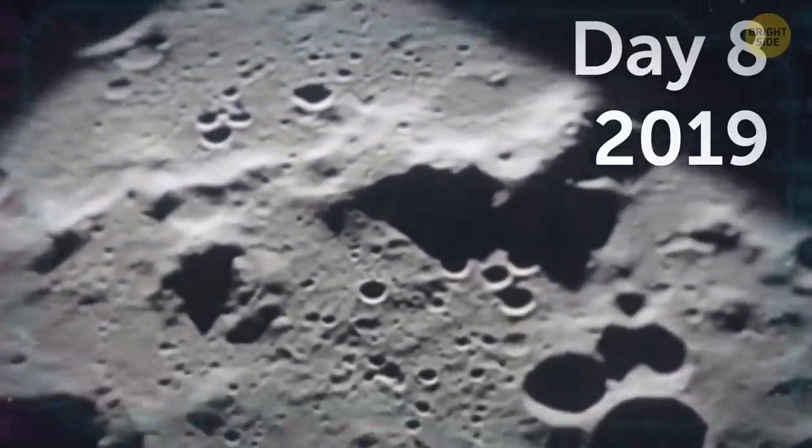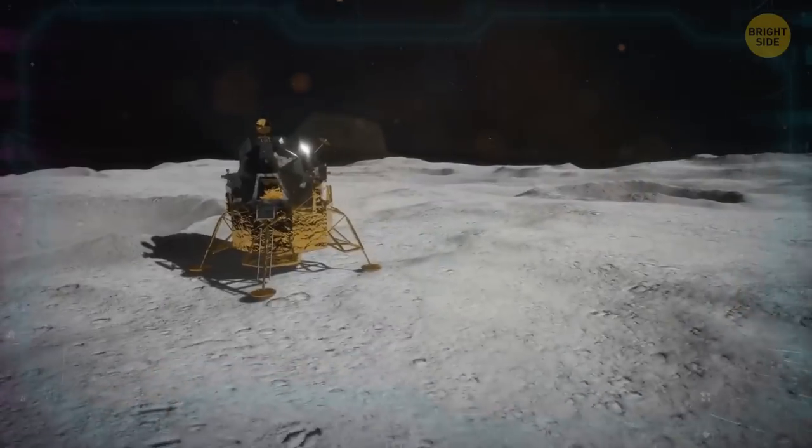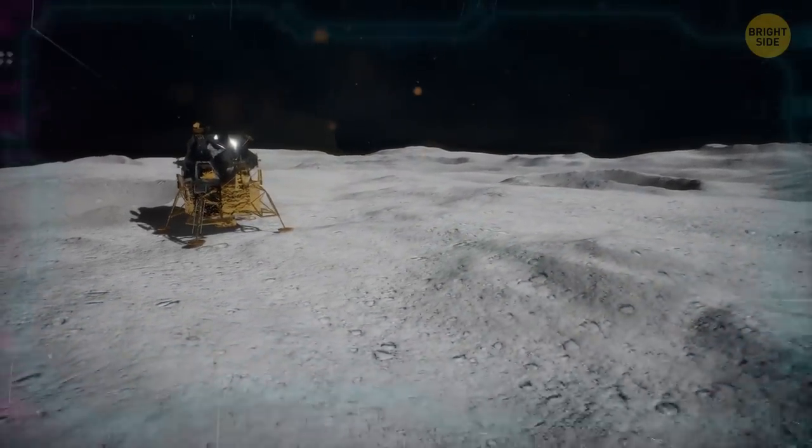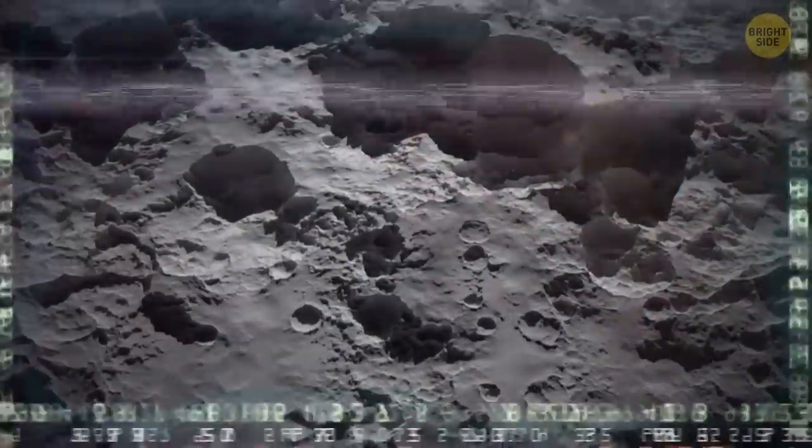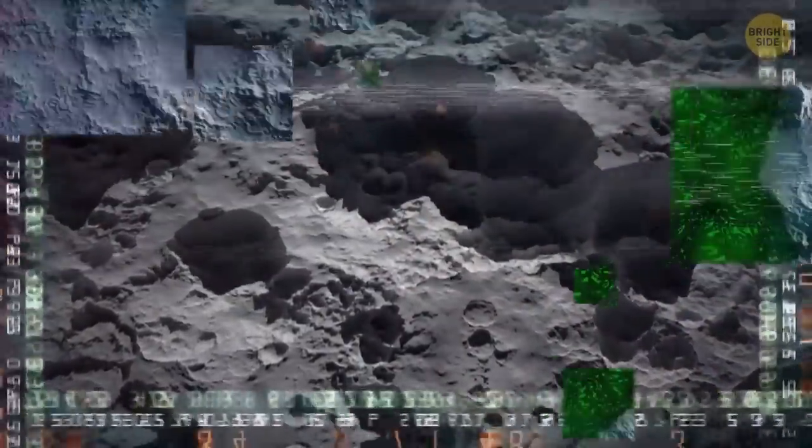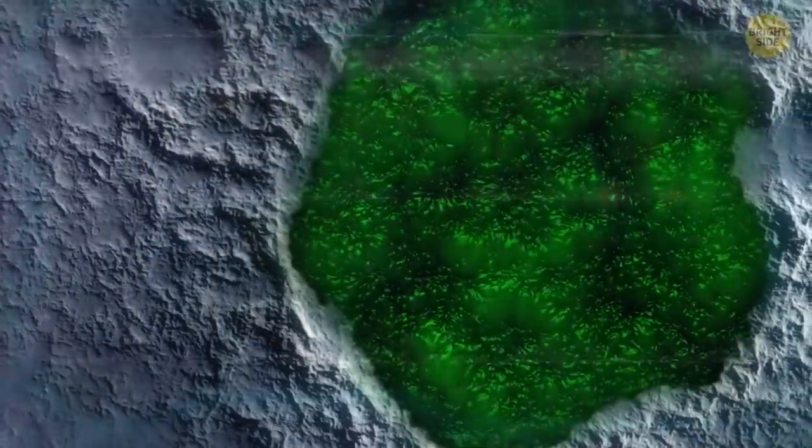On day 8 of its mission in 2019, China's lunar rover discovered something really strange on the far side of our moon that caught the attention of the entire world. While navigating a path around a bunch of lunar craters, it spotted something really weird lurking inside one of the moon's holes. It was a colored substance, just like gel, that we'd never encountered before.